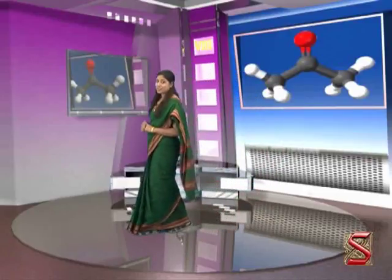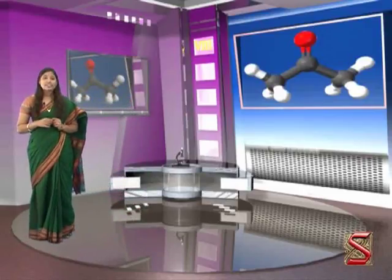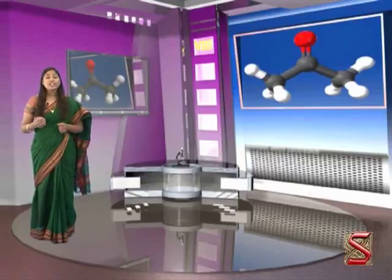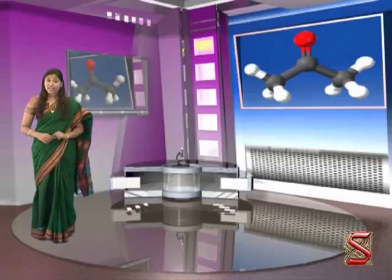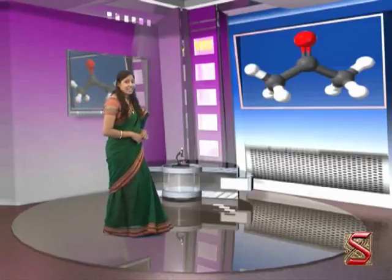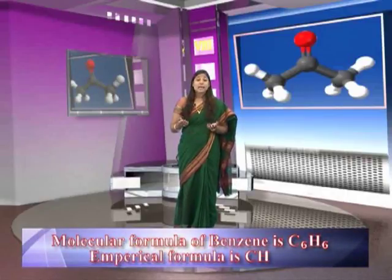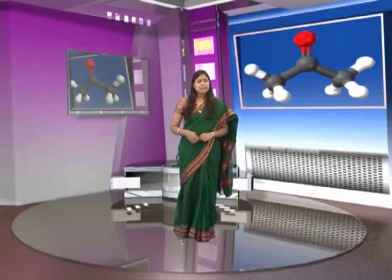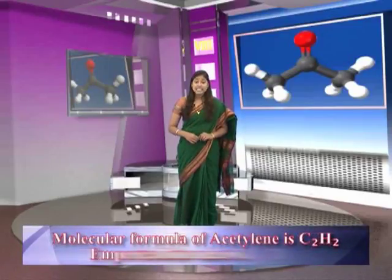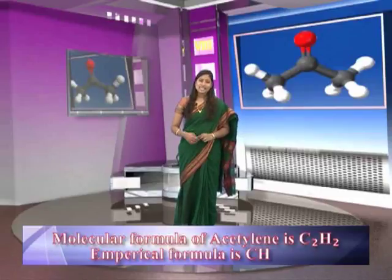Let us see some examples of compounds with their empirical formula and molecular formula. The least possible ratio of atoms in a molecule enables writing down the empirical formula, whereas the molecular formula represents the ratio of atoms actually present in the molecule. In many cases the empirical and molecular formula of a compound are the same, but in many other cases this is not true. For example, the molecular formula of benzene is C6H6, but its empirical formula is CH. Similarly, the molecular formula of acetylene is C2H2, but its empirical formula is also CH.